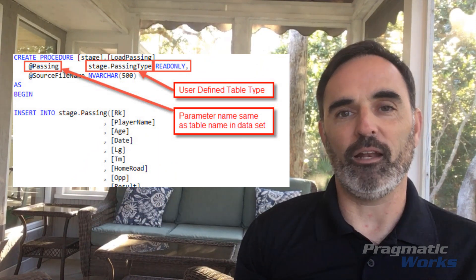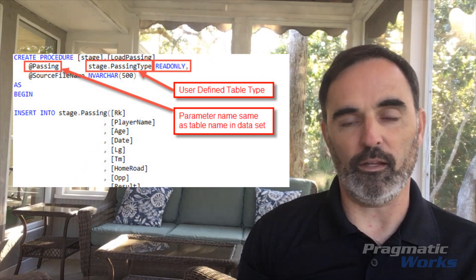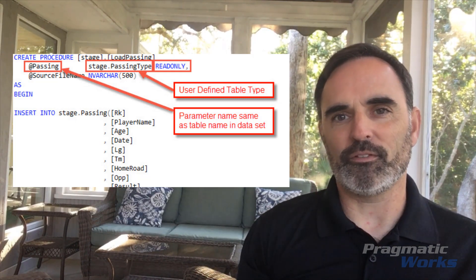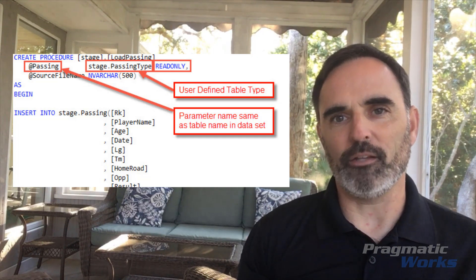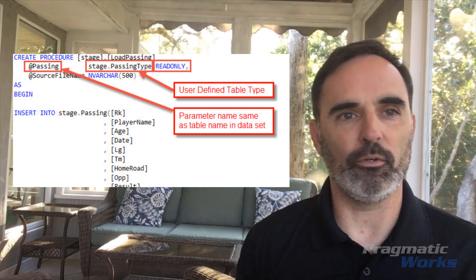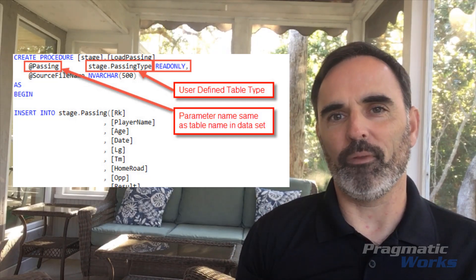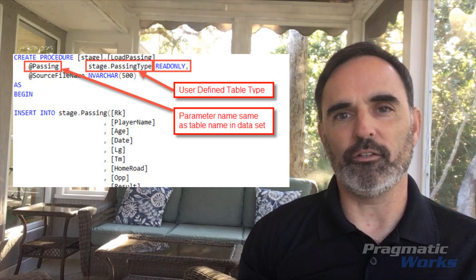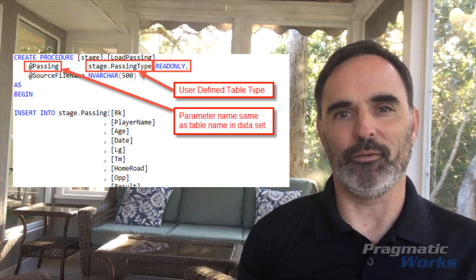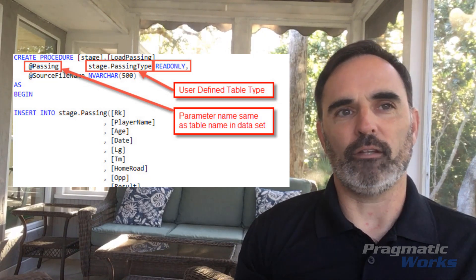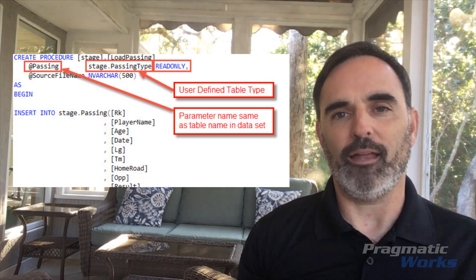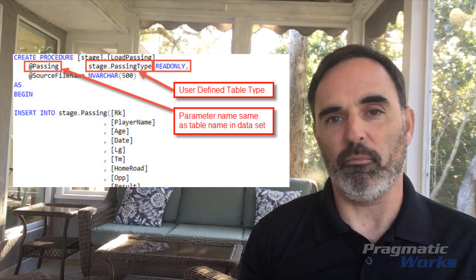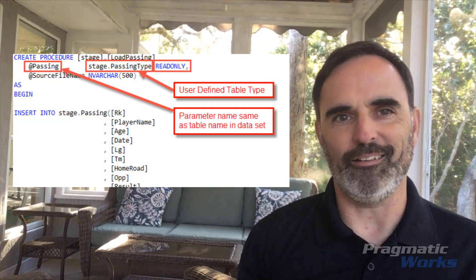Once I've got that table data type defined, I'll go ahead and create my stored procedure. Inside this stored procedure I might have some logic — at a minimum, maybe I want to add some metadata from the ADF process to my target table. You can see in my stored procedure I'm doing a pretty simple insert, but I can call out some functions, do some data cleansing, maybe get rid of some values I don't want. The key here is at the very beginning I've created a parameter using that data type I created earlier. The parameter name I chose here was just "passing." You want to take note of that parameter name because we're going to need it in just a second.